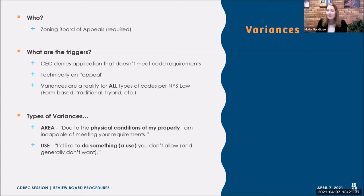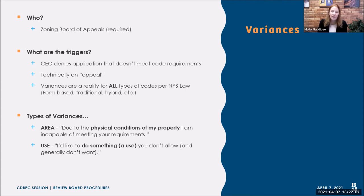Jumping into our first application example: variances. The 'who' for this is the zoning board of appeals, and it cannot be anybody else. If you have a zoning code or land use regulations, you must have a board of appeals, and that is the only board that can issue or address appeals and variances. Your trigger is technically an appeal — something your code enforcement or administrative staff says doesn't meet code requirements. If you're issuing a lot of variances, there's probably an issue in your code — that's a big red flag.